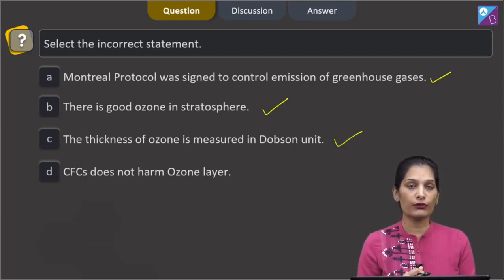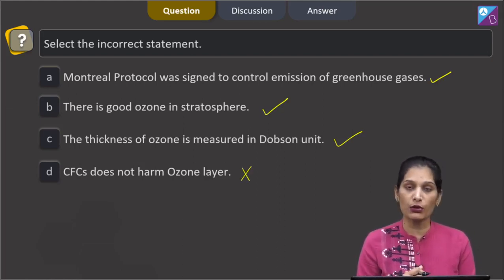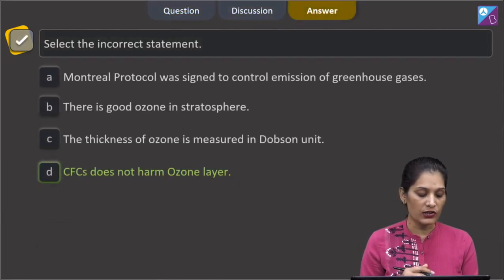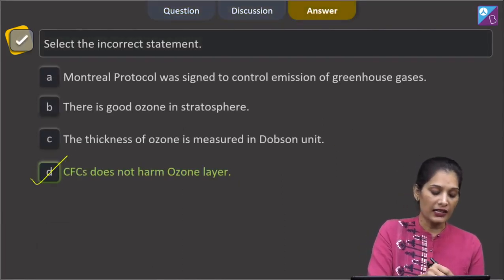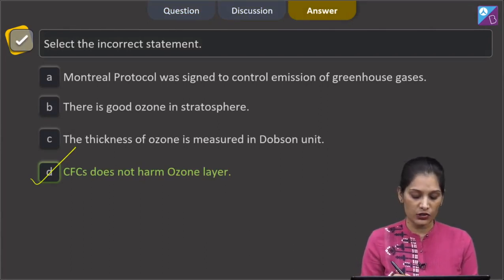C, the thickness of ozone is measured in Dobson unit. This is also correct statement. D, CFCs or the chlorofluorocarbons does not harm ozone layer. This is false because chlorofluorocarbons harm the ozone layer as they break ozone into molecular oxygen and oxygen atom. The correct option for the given question is option D, that CFCs does not harm ozone layer.